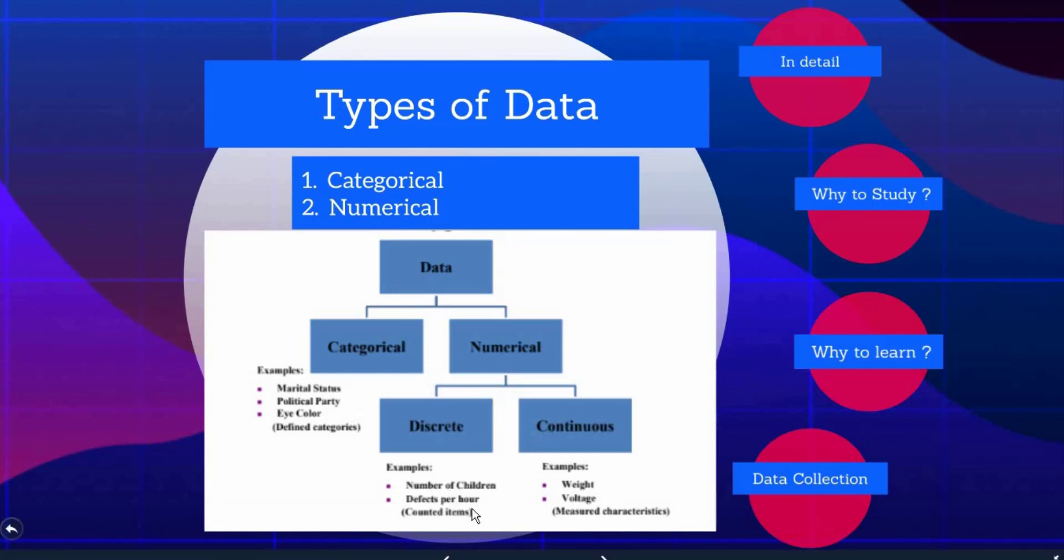So, let us come to numerical and discrete. The number of children are discrete. Discrete in the sense we can count them. Number of children like we can say 2, 3 or 4. And defects per hour. If you are manufacturing a certain product in your company, you will be dealing with defects per hour. So, you will be counting them. And let us go to the continuous. Continuous is like weight, voltage, height. You can measure it.